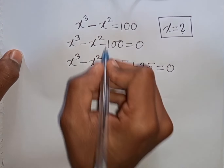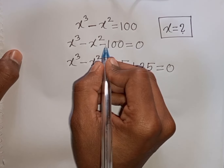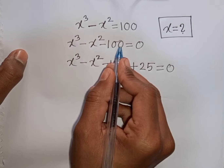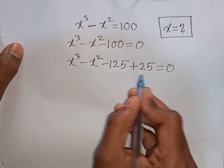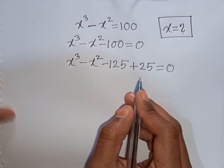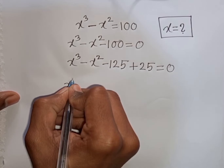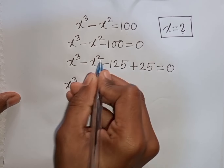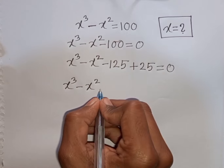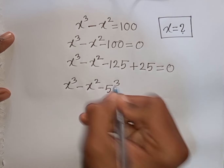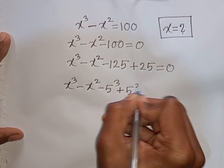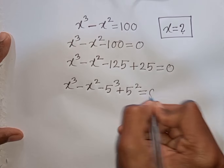How to understand this? Pay attention here. The nearest cubic number of 100 is 125. So we can write minus 100 as minus 125 plus 25. Now we have x power 3 minus x power 2, then minus 125 can be written as minus 5 cube, and plus 25 is same as plus 5 square, then is equal to 0.